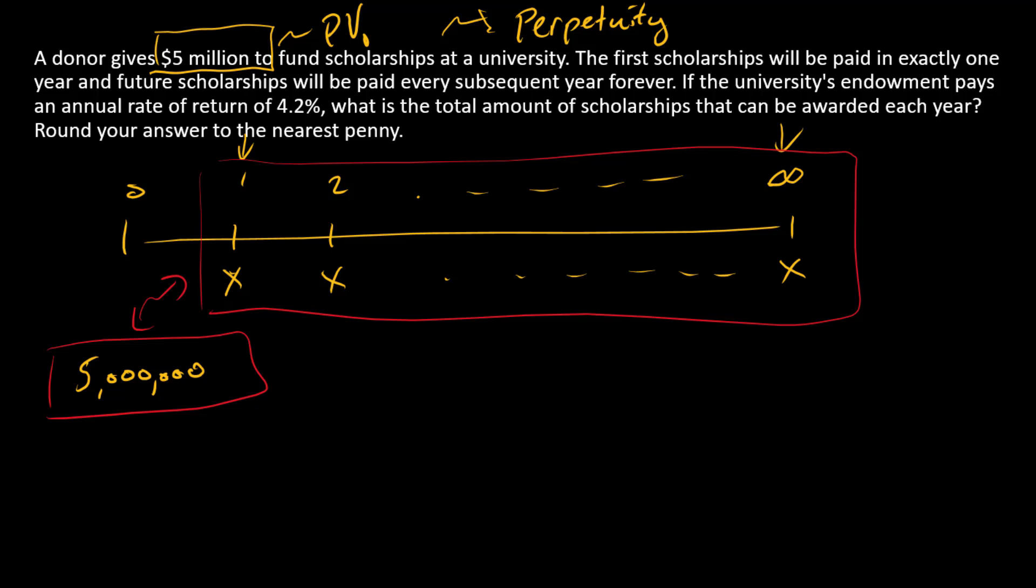So what do we need? We need to find X. Our standard perpetuity formula works because the first payment happens in year one, and so we know that the present value of a perpetuity, which is equal to the cash flow amount divided by the discount rate, that works. So what are we looking for here? We're trying to solve for this C amount, that's our X that we're looking for. So C is equal to PV at time zero times R.